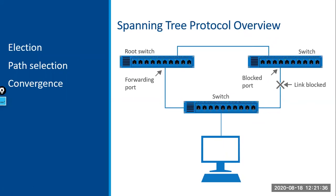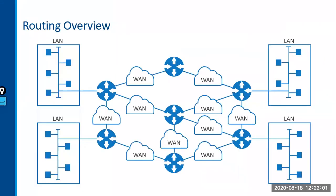The good news is Spanning Tree Protocol is on by default — switches configure it on their own. The bad news is if you want to design the network efficiently, you'd want to do some configuration to influence which ports should be forwarding or blocking and which switch should be the root.